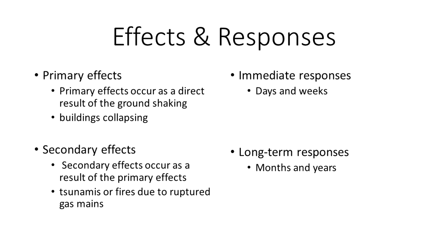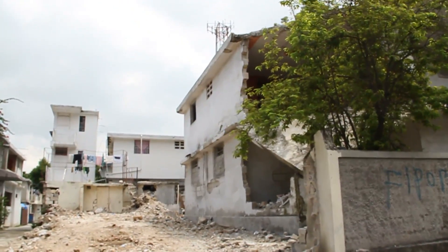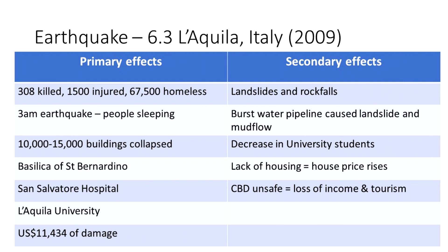Primary effects are as a direct result of the earthquake, whereas secondary effects are a knock-on effect. Some of the primary effects include death rates, how many people are injured, how many people are made homeless, and buildings collapsing or being destroyed. In Italy, hospitals were damaged as well as the university.